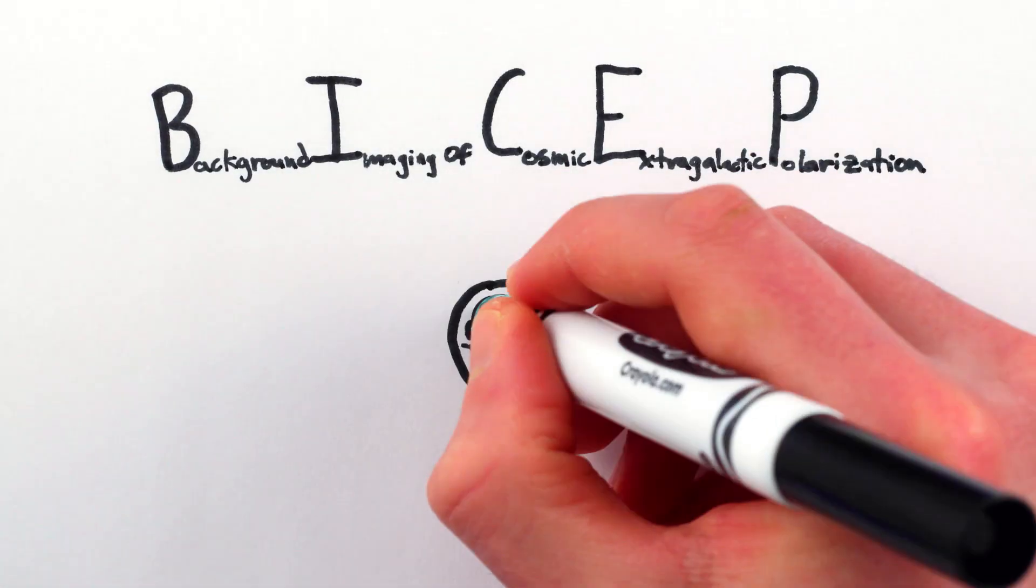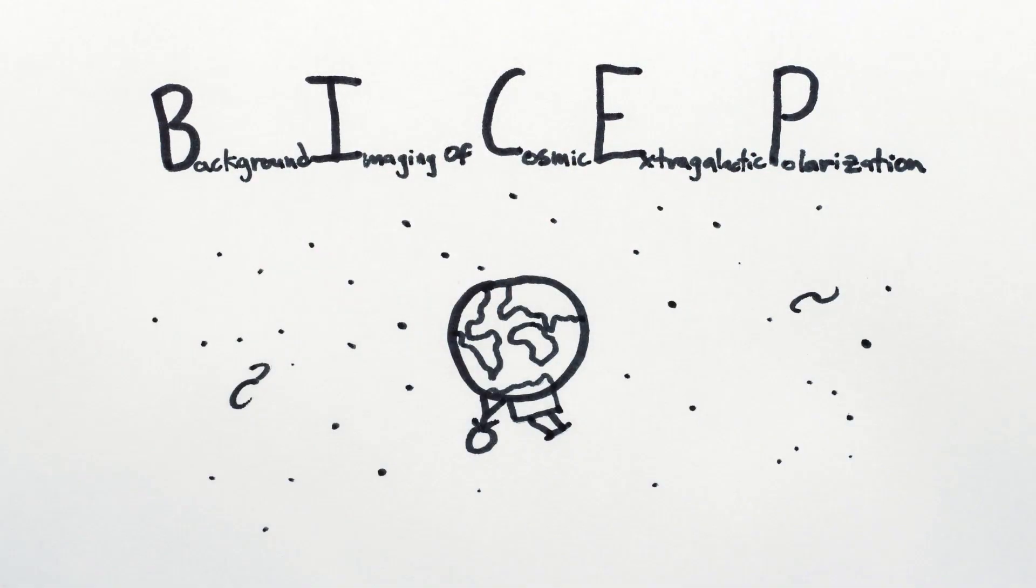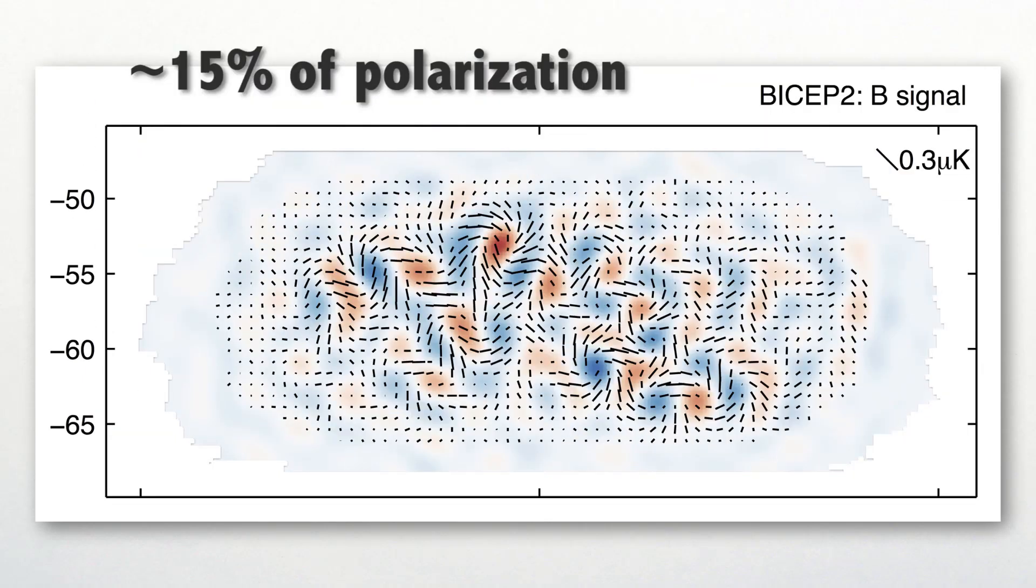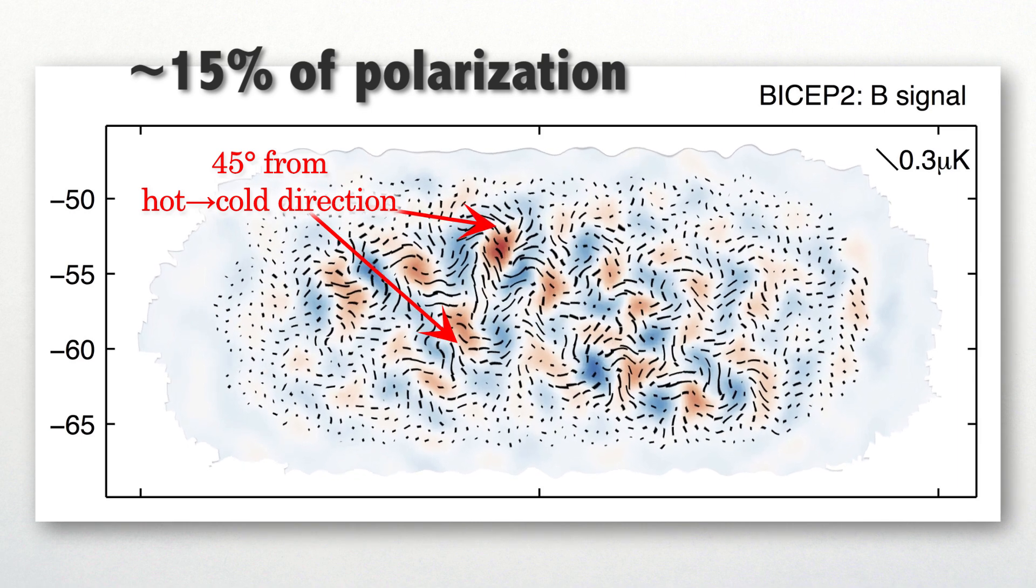Starting with the results from the BICEP telescope at the south pole, we see that while a majority of the polarization came from clumps in the early universe, about 15% of it seems to come from jiggles. And these jiggles are a big deal.